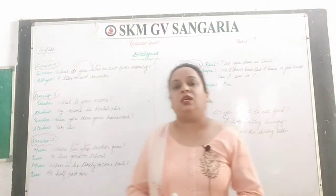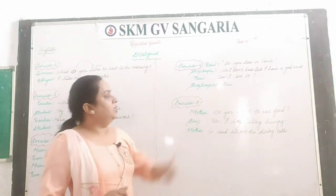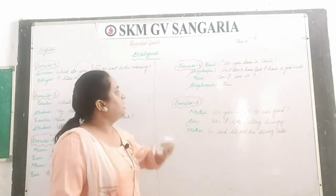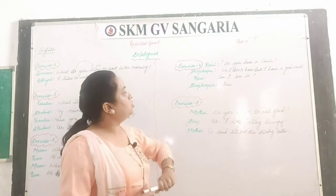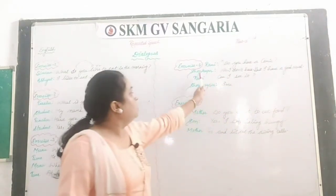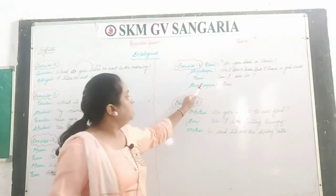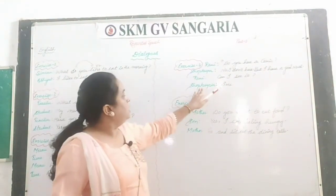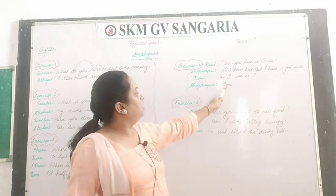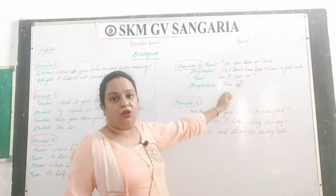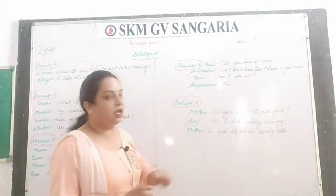So like this you have to solve exercises when given in dialogue form. Exercise number four is a dialogue between Rani and the shopkeeper. Rani asks: Do you have a comic? Shopkeeper answers: No, I don't, but I have a good novel. Rani says: Can I see it? Shopkeeper said: Sure. Here you have to see the helping verb — you cannot directly write 'sure'.